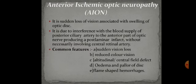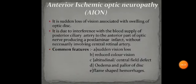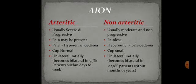AION is sudden loss of vision associated with swelling of the optic disc. It occurs due to blockage of the posterior ciliary artery leading to post-laminar infarct. Common features include sudden vision loss, reduced color vision, altitudinal or central field defect (superior or inferior field loss), edema and pallor of the disc, and flame-shaped hemorrhage. AION may be inflammatory or non-inflammatory, and is categorized into two broad groups: arthritic AION and non-arthritic AION.